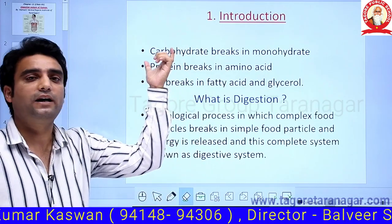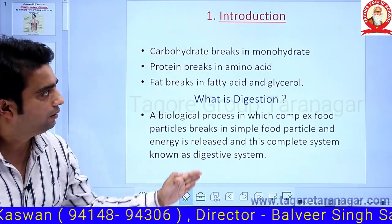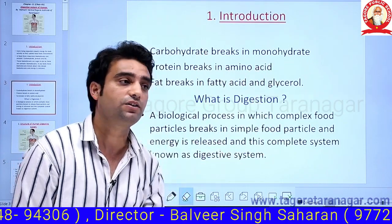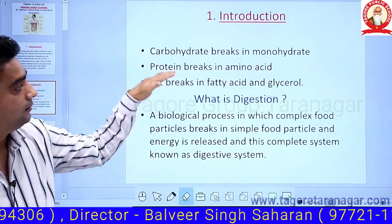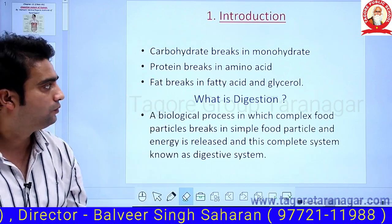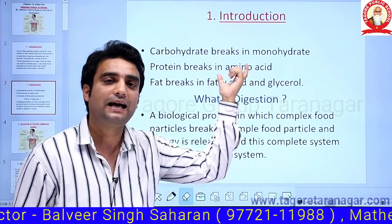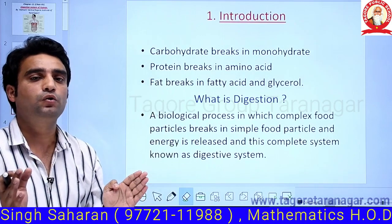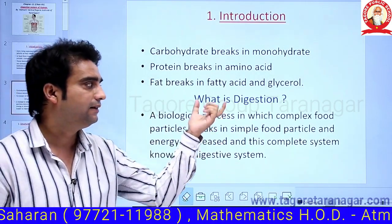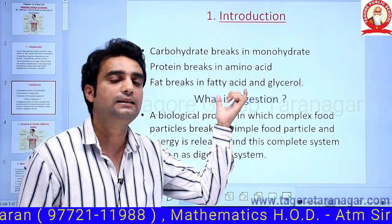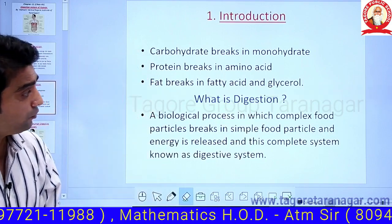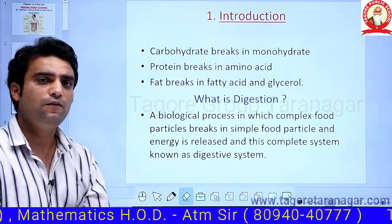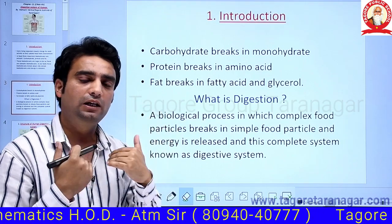In our body, the carbohydrate complex molecule breaks down into small units known as monosaccharides. Protein breaks down into small units known as amino acids. Fat or lipid breaks down into two components — fatty acids and glycerol.